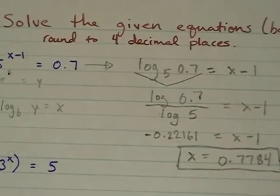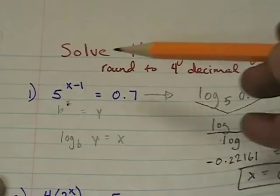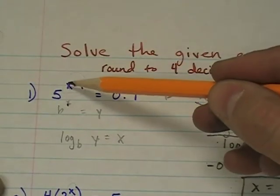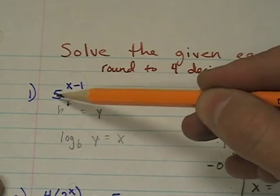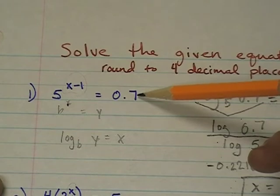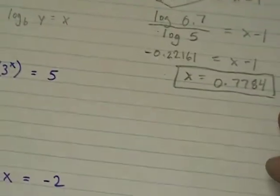And then you could take your calculator, take this answer, and plug it in right here, 0.7784 minus 1, then 5 raised to that power, and you'll get approximately 0.7.